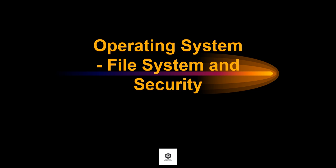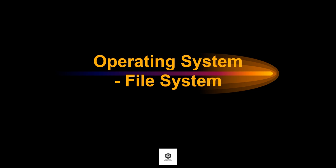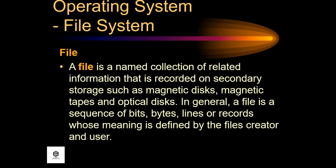Hello everyone, today we'll have a new lesson about operating system file system and security. A file is a named collection of related information that is recorded in secondary storage such as magnetic disk, magnetic tapes, and optical disk. In general, a file is a sequence of bits, bytes, lines, or records.